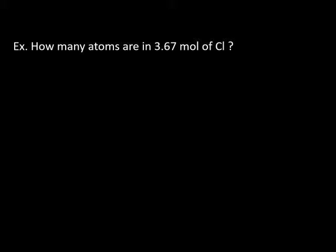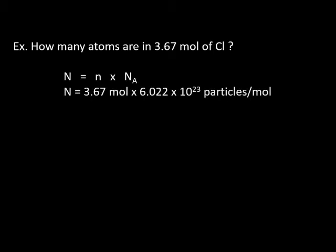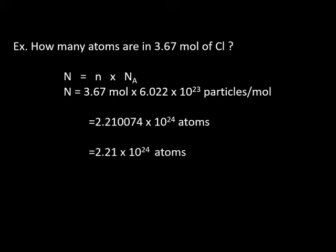This is chlorine atoms — notice it's not Cl₂. Using our formula, N = n times Nₐ: substituting in the values, n is 3.67 moles times 6.022 times 10 to the 23. Multiply those together and we get 2.210074 times 10 to the 24 atoms. Rounding to three significant digits — because 3.67 has three significant digits — our answer is 2.21 times 10 to the 24 atoms.